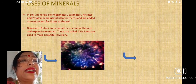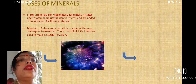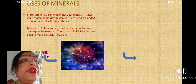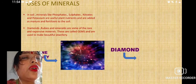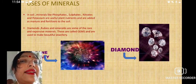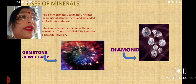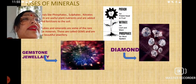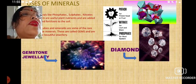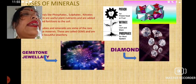Diamond, ruby, and emerald are all very expensive minerals and these are called gems. Here you can see these are the gemstone jewelry — these are diamonds. Minerals like potash, nitrate, and phosphate can also be used as fertilizers.